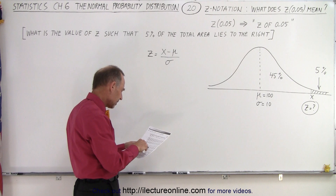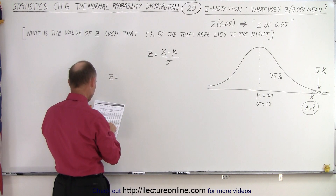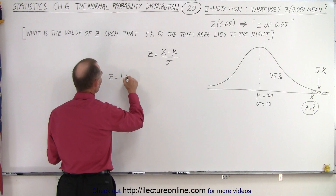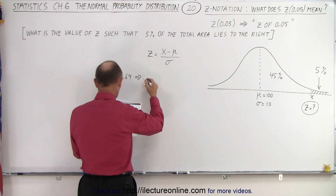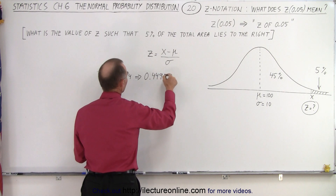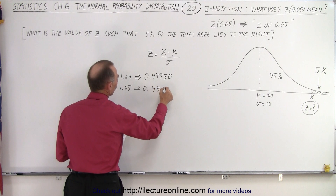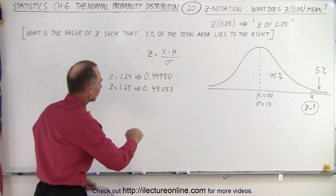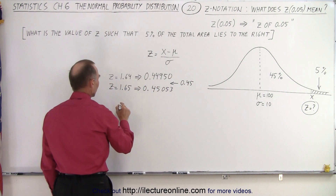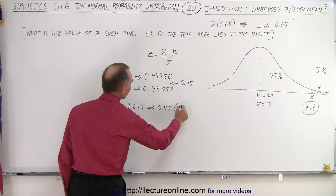Right about here, it's halfway between two values. For Z equals 1.64, that corresponds to a decimal of 0.44950. And then if we take Z equals 1.65, that corresponds to the value of 0.45053. As you can see, right halfway in between falls the value of 0.45. So we can say that when Z equals 1.645, that corresponds to 0.45, which corresponds to 45%.